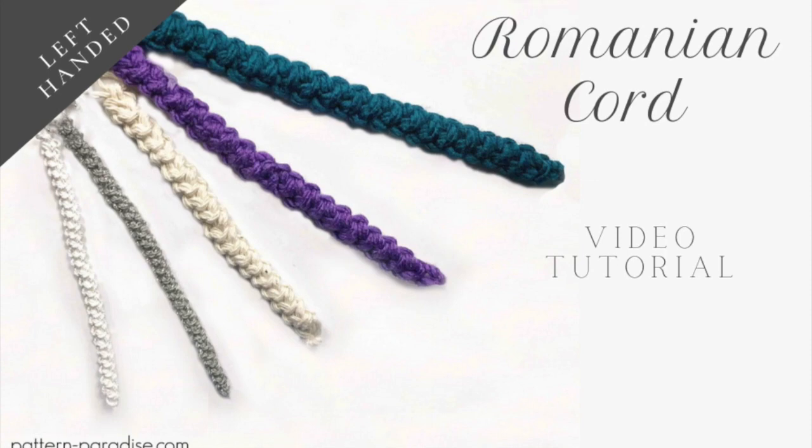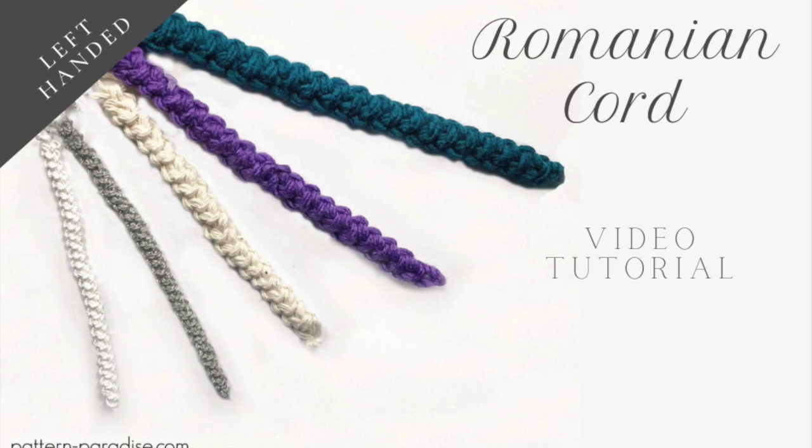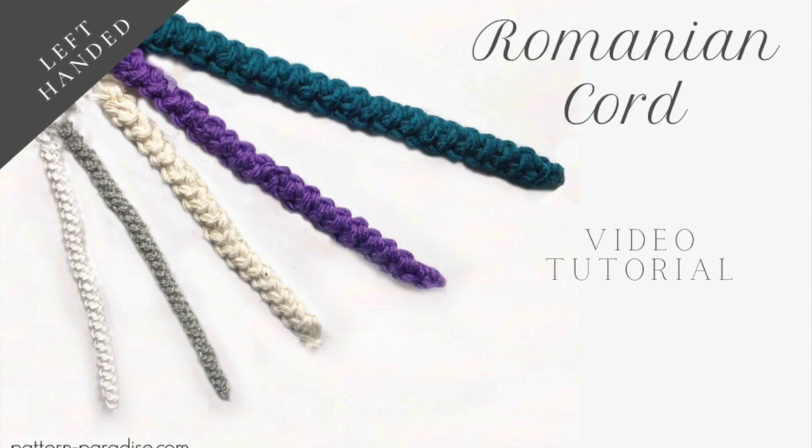You can use any yarn you like for this cord. Just be sure that you're using the appropriate hook for the weight of yarn that you've chosen. Typically you'd want to use a hook that's one size smaller than you would normally use for that weight of yarn. So for my example, I'm using a chunky yarn and I'm using it with an H5mm hook.